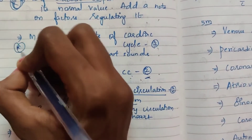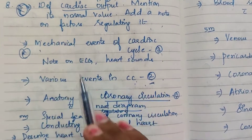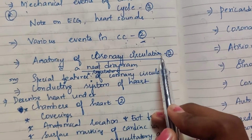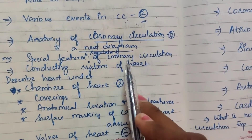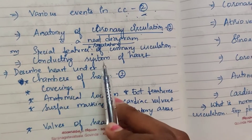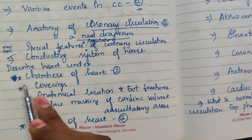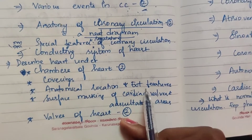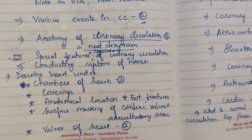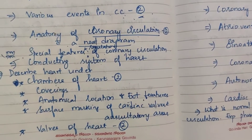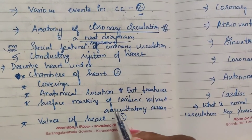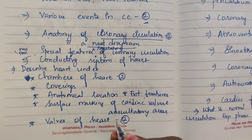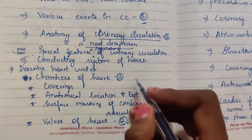Anatomy of coronary circulation with neat labeled diagram appears two times for 5 marks. Special features and regulation of coronary circulation. Conducting system of heart for 15 marks. Describe the heart under headings: chambers of heart, coverings, anatomical location, and external features. Surface marking of cardiac valves, auscultation areas, and valves of heart — mentioned two times.